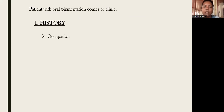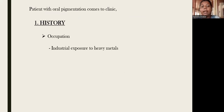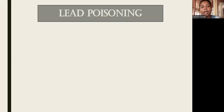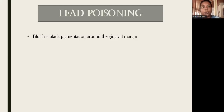To diagnose exogenous pigmentation, we should know the patient's history. We should ask for their occupation — because cleidocranial pigmentation in the oral mucosa and perioral structures can occur if there is industrial exposure to heavy metals, dust, or vapors containing heavy metals. One such pigmentation is lead poisoning.